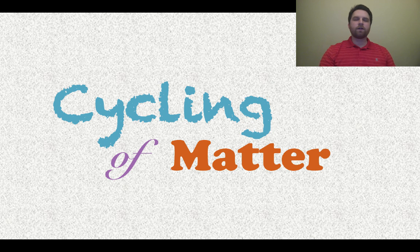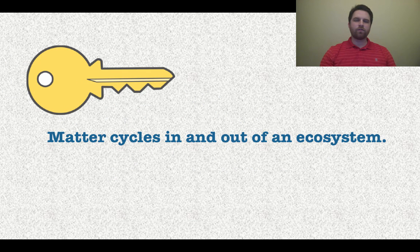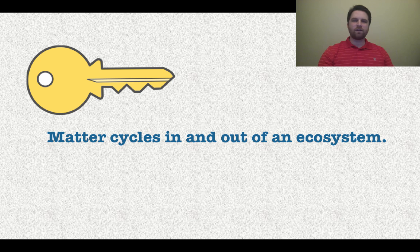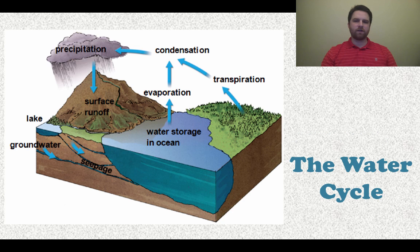Hey, it's Mr. Veve and we're going to talk about the cycling of matter today in this lesson. Let's get right to it with your first key concept: matter cycles in and out of an ecosystem. We're talking about carbon, water, and nitrogen cycles here. So let's start with the water cycle.